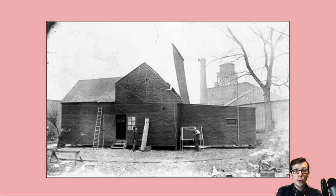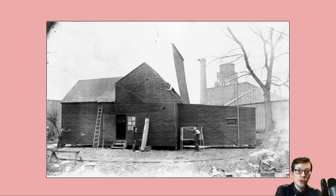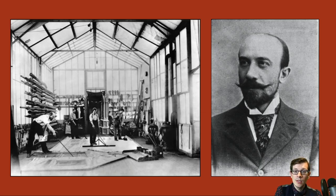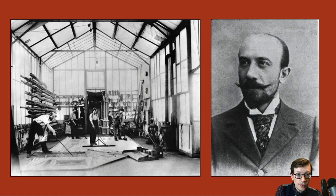Just two years before the Lumières would launch the first public screening of films in France, Thomas Edison would complete the first dedicated production studio — often referred to as America's first film studio — in West Orange, New Jersey. In the early 20th century, French illusionist and director Georges Méliès was one of the pioneers of early motion pictures, developing the use of special effects, multiple exposures, storyboards, cross dissolves, and other technical and narrative innovations to tell stories through the emerging medium of the motion picture.